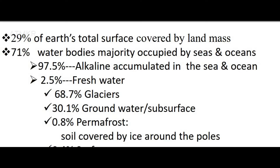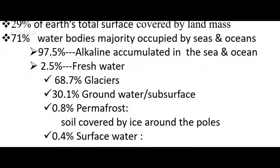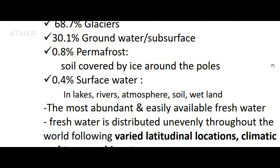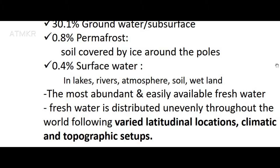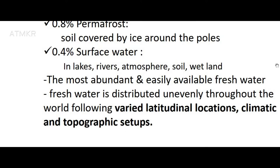About 29% of Earth's total surface is covered by land mass, and 71% is water bodies, the majority occupied by seas and oceans. Of total water, 97.5% is saline accumulated in seas and oceans, while only 2.5% is fresh water. Of that fresh water, 68.7% is in glaciers, 30.1% is groundwater or subsurface, and 0.8% is permafrost soil covered by ice around the poles, leaving a very small amount as the most abundant and easily available fresh water.